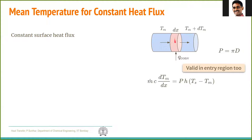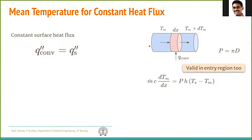The surface area is a perimeter, which is π·D times Dx. So we can write the balance: Ṁ·C·dT equals P·H times Dx, or Ṁ·C·dT/Dx equals P times H times (Ts minus Tm). This is a generic balance valid even in the entry region.